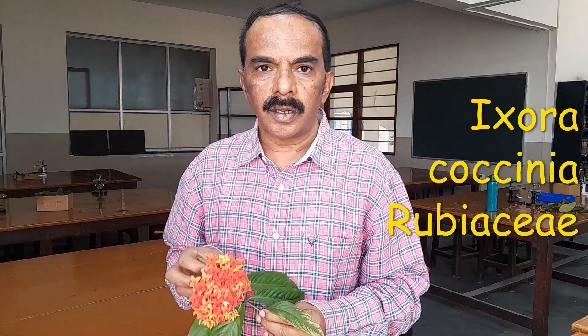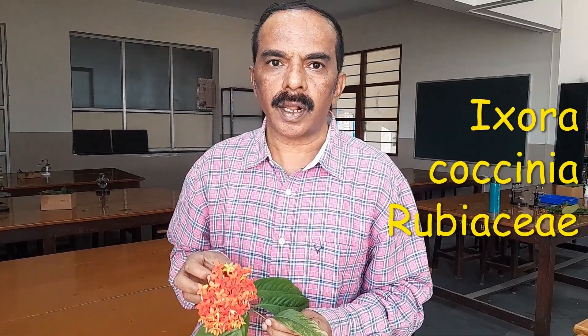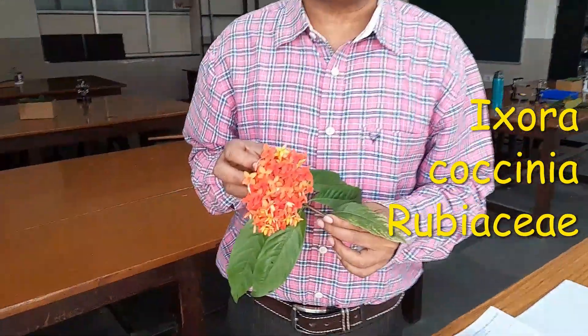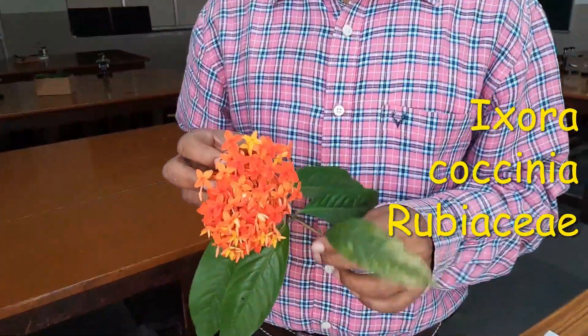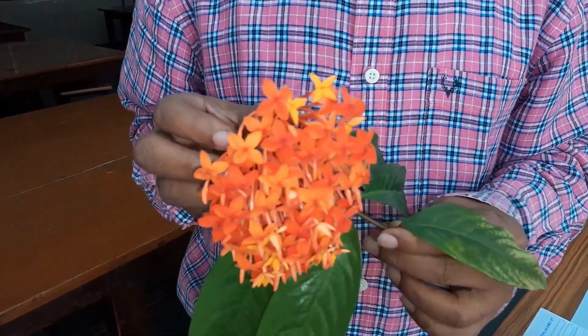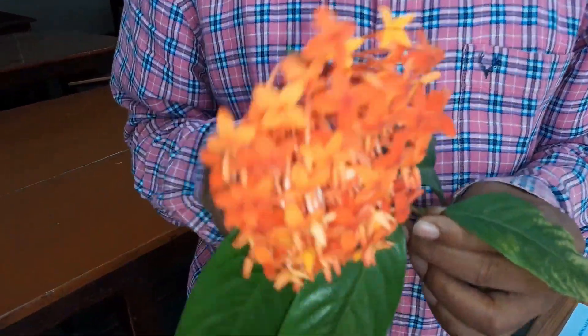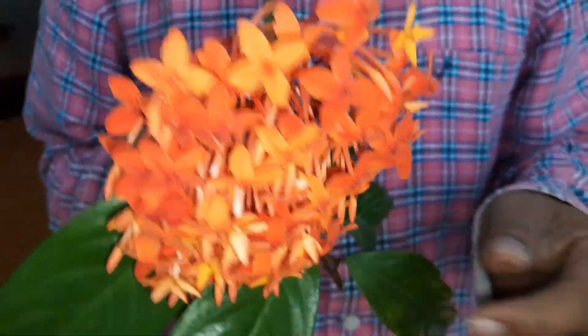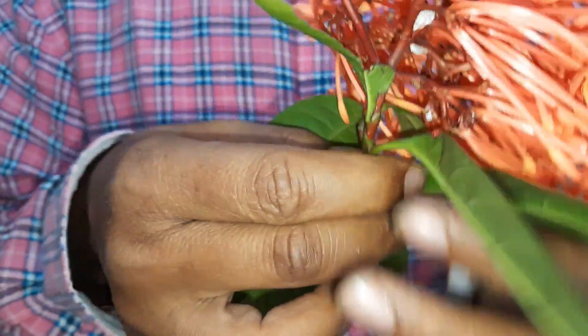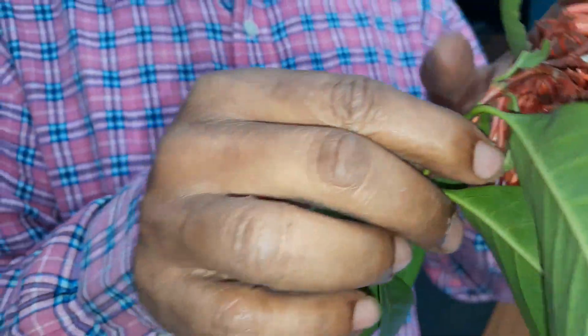This is Ixora coccinea of the family Rubiaceae. We will study this plant today. I will just tell you the important characters of this family.